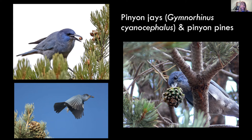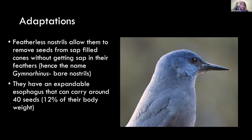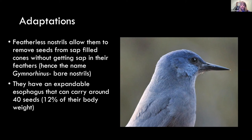They've also been observed digging through snow, though at two inches versus the nutcracker's four feet — they live more in the Great Basin where there's less snow. One of their cool adaptations is featherless nostrils — gymnorhinus, or 'bare nostrils' — which allows them to remove seeds from sap-filled cones without the sap getting stuck in their feathers. Pinyon pine cones are extremely sappy, so this is a pretty cool adaptation. They don't have a sublingual pouch but have an expandable esophagus that can carry around 40 seeds, about 12% of their body weight.